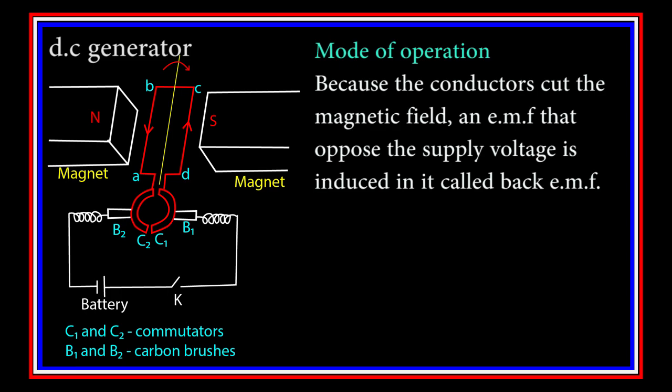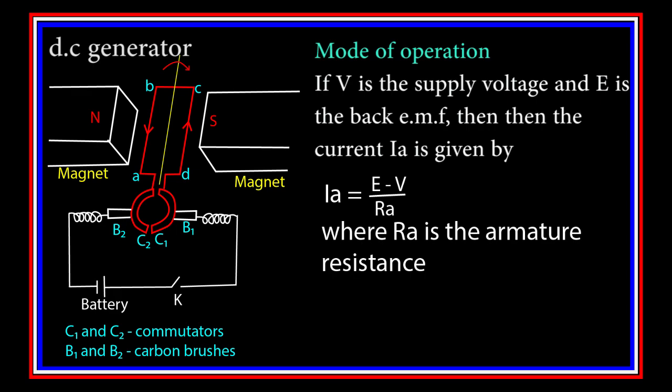called back EMF. If V is the supply voltage, and E is the back EMF, then the current is given by Ia = (V - E) / Ra, where Ra is the armature resistance.